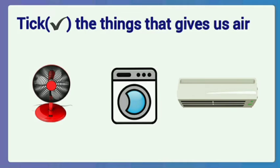Tick the things that give us air. Here, three pictures are given. We want to tick the pictures or objects that give us air. What are they? Fan, washing machine, and AC. Tick fan and AC.